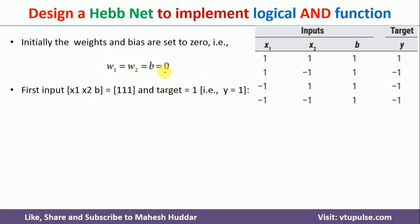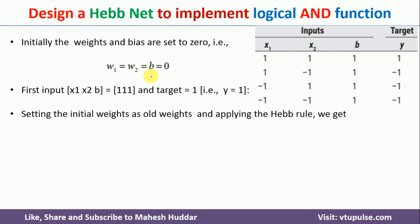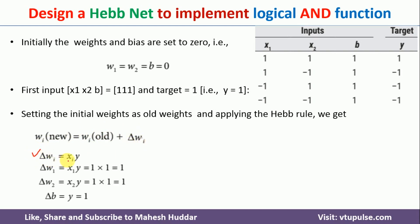The question is how to modify these weights and the bias. To modify the weight and bias, the Hebb rule states: W_i(new) = W_i(old) + ΔW_i, where ΔW_i is the change of weight. We know the old weight, but we need to find ΔW_i. ΔW_i is equal to X_i times Y, where X_i is the input and Y is the associated target.